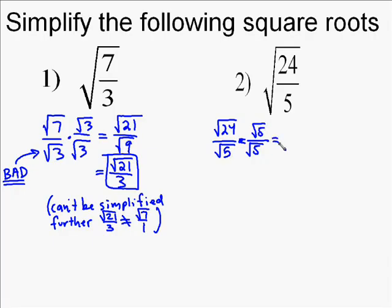So that gives us on the top, 24 times 5 is 120, so the square root of 120. And then on the bottom, square root of 5 times square root of 5 is square root of 25, which we know that is 5.